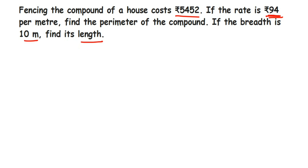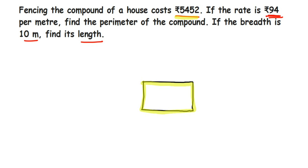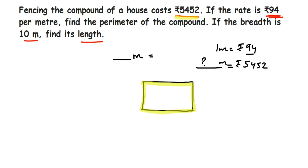Usually we find the perimeter first and then calculate the cost. But in this question, they have already given the cost, and we have to find the perimeter using that. Then, using the perimeter, we have to find the length. We know that for one meter they are charging 94 rupees, and the total cost is 5452.